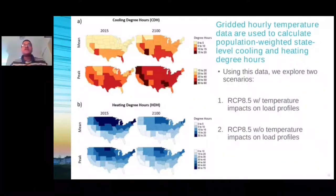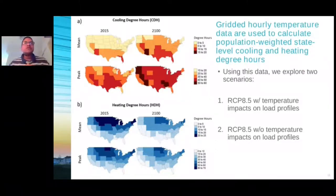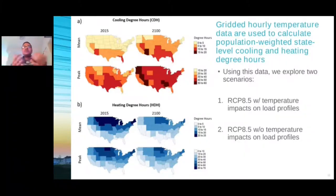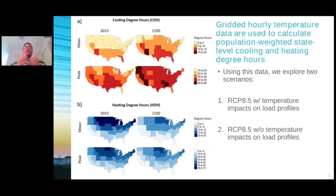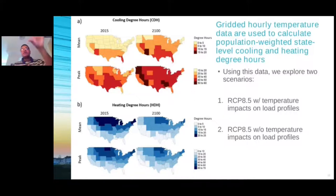Moving on — to answer our specific question, we've taken gridded hourly temperature data to calculate population-weighted state-level cooling and heating degree hours. This data is represented in the form of maps in this slide. You can see cooling degree hours and heating degree hours, and we've also shown mean and peak cooling and heating degree hours. A couple of things stand out from these maps: first, the climatic conditions are really different across the United States, and the evolution over time is pretty starkly different and heterogeneous across the US, both for cooling degree hours and heating degree hours.